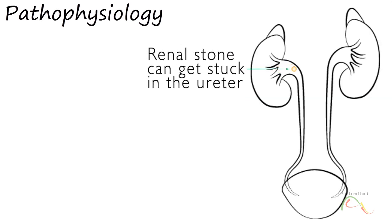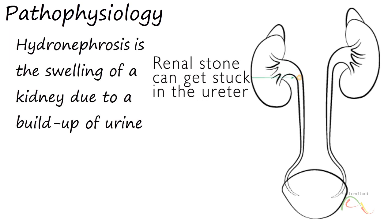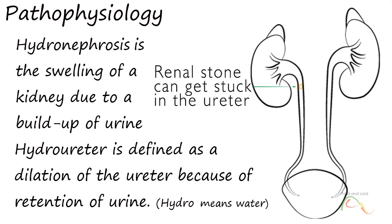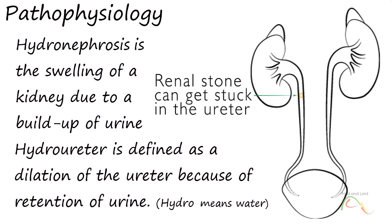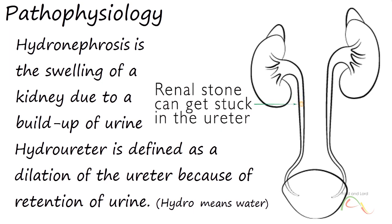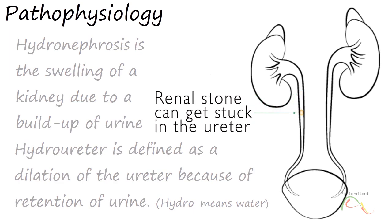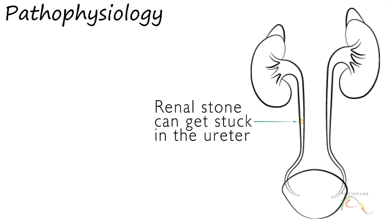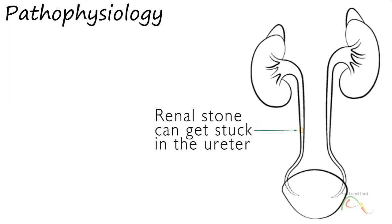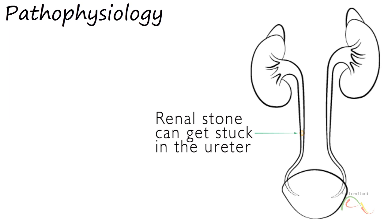Pathophysiology. As a stone moves from the renal collecting system, it can cause obstruction and hydronephrosis of the ureter, decreasing the rate of ureteral peristalsis, causing urine to back up into the kidney. This can decrease glomerular filtration rate of the affected kidney and cause increased renal excretion of the unaffected kidney.